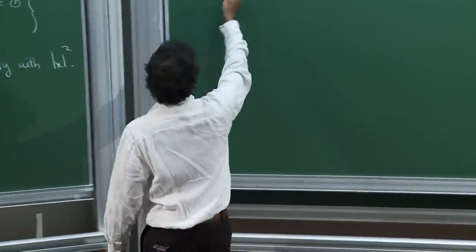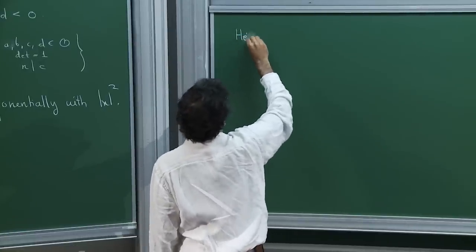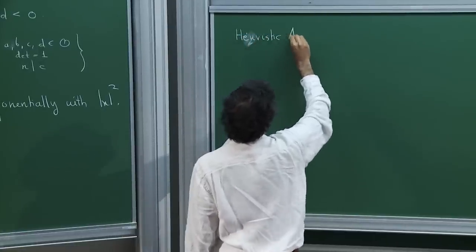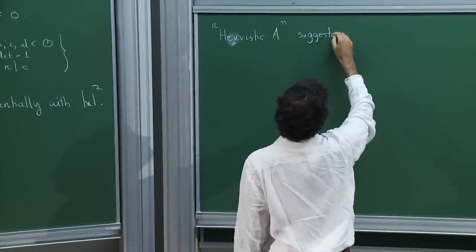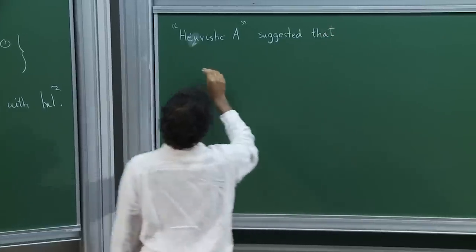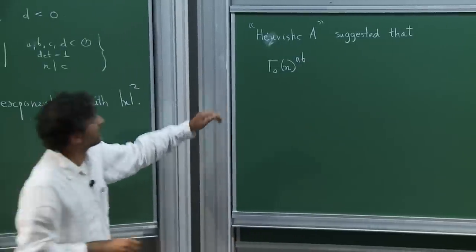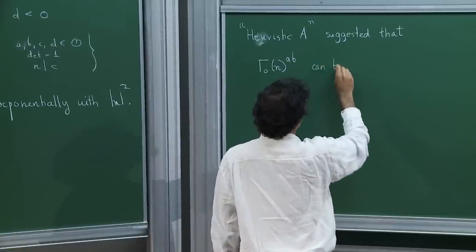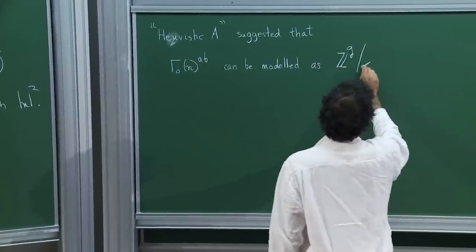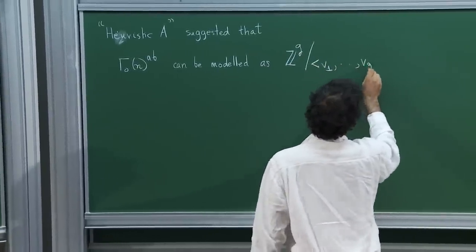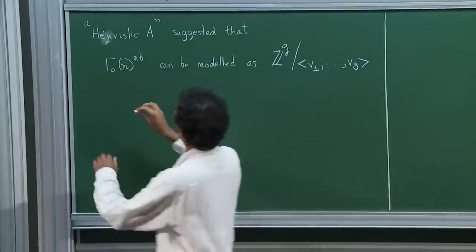So this first heuristic from yesterday — what I called heuristic A — suggested that when you take this group and abelianize it, you should model this as integers to the power g, quotiented by random vectors v1 through vg.